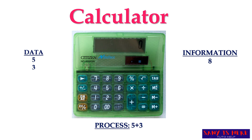The data values are five and three, and the process is addition. To add, I write five plus three and I will get the result. When you put the data into the calculator, it will process and produce the result — that is called information. So let us see what is data and information.